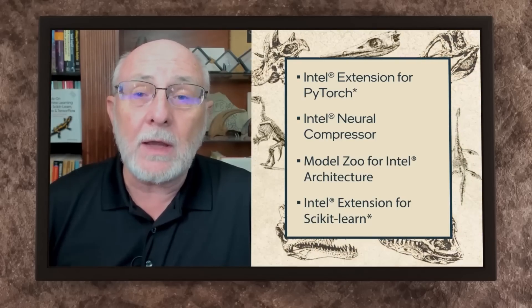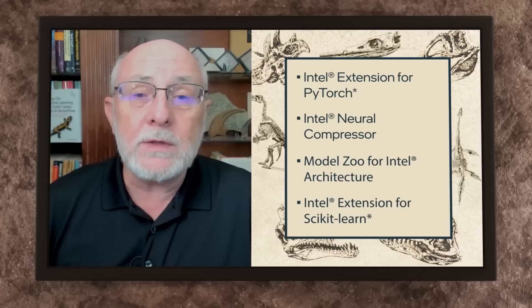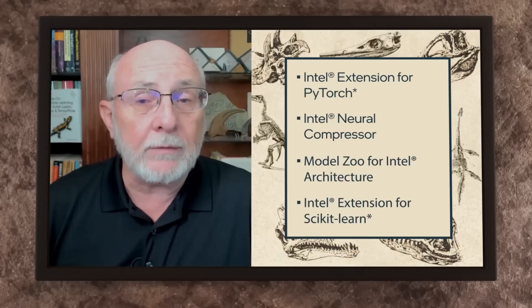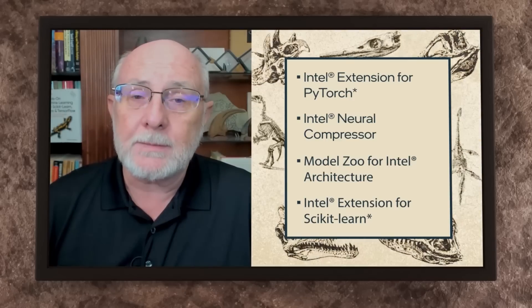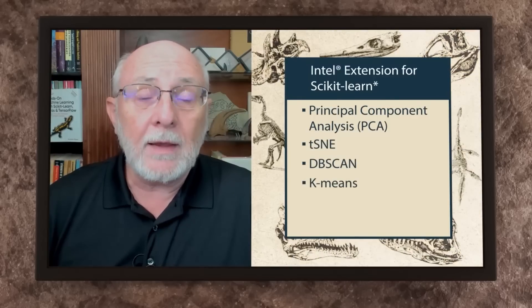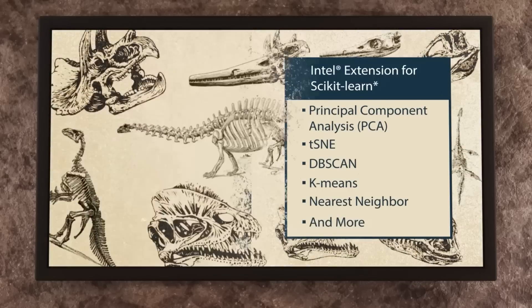And if we have an Intel-optimized version of that import, then we will use the optimized version instead of the stock version — that's another way to get the speed-ups. The Intel extension for scikit-learn supports 30 algorithms on CPUs and 10 for Intel GPUs. All the usual suspects — principal component analysis (PCA), t-SNE, DBSCAN, k-means algorithms, and nearest neighbor — are all supported on the Intel CPU.